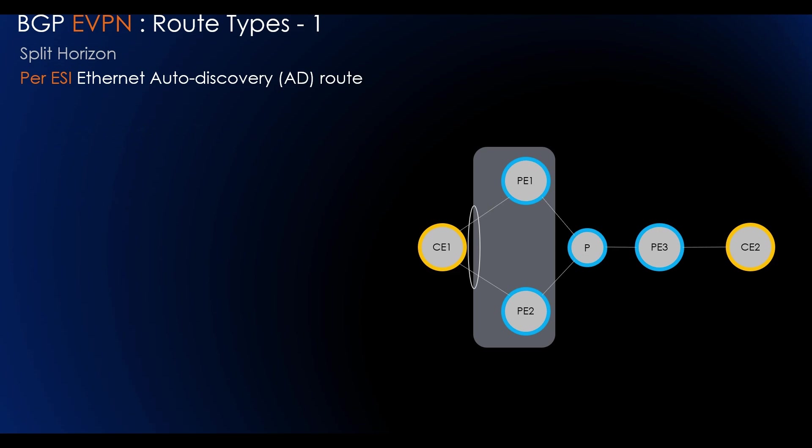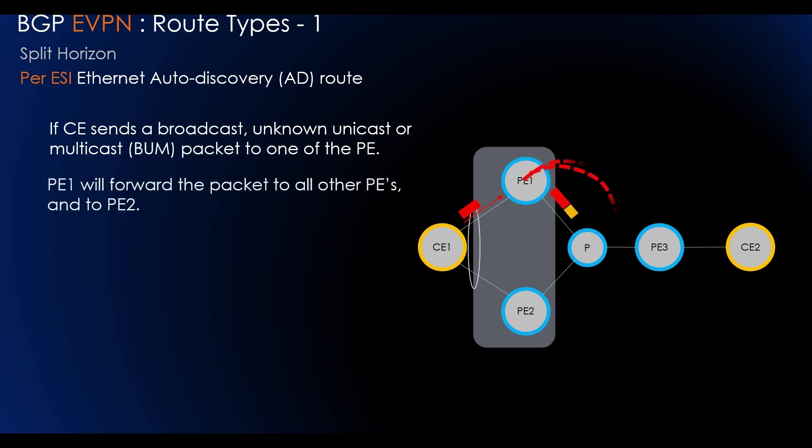The next is split horizon. If a CE is multi-homed to one or more PEs on an Ethernet segment operating in all-active redundancy mode, and the CE sends broadcast, unknown unicast, or multicast packets to one of the PEs, let's say PE1, then the PE will forward that packet to all other PEs. But when it is received at PE2, it will drop the packet and not forward it to the CE. This filtering is referred to as split horizon. The use of split horizon filtering is a mechanism which is highly recommended because it prevents transient loops at the time of failure.